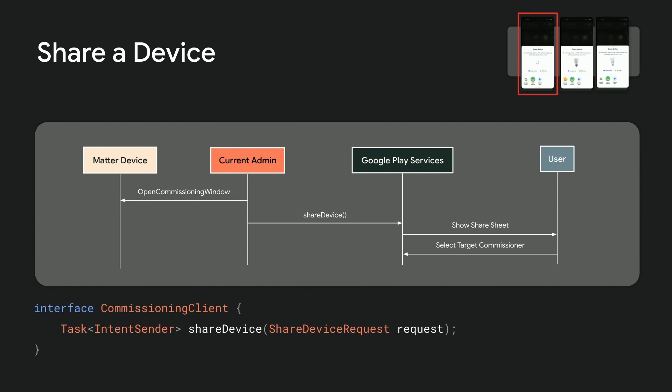You must first open a commissioning window on the device and provide the details including the manual pairing code and window duration in your share device request. This request will succeed if the user chooses a sharing destination. If the user cancels or the commissioning window times out at the specified duration without choosing a destination, you'll receive a result canceled status and should revoke the commissioning window.